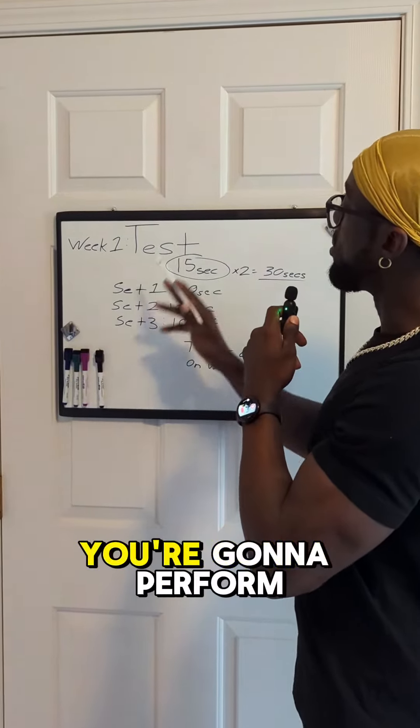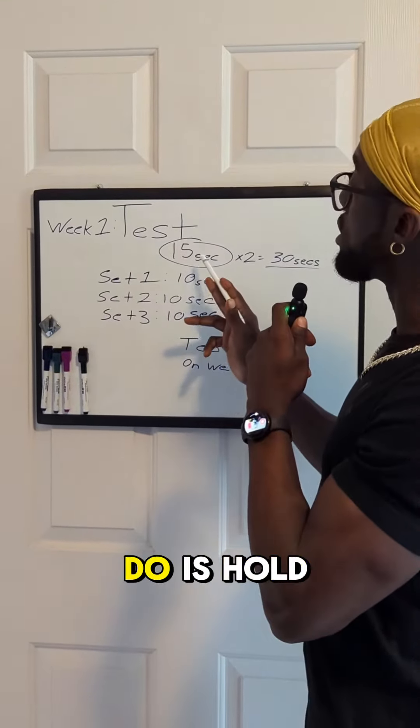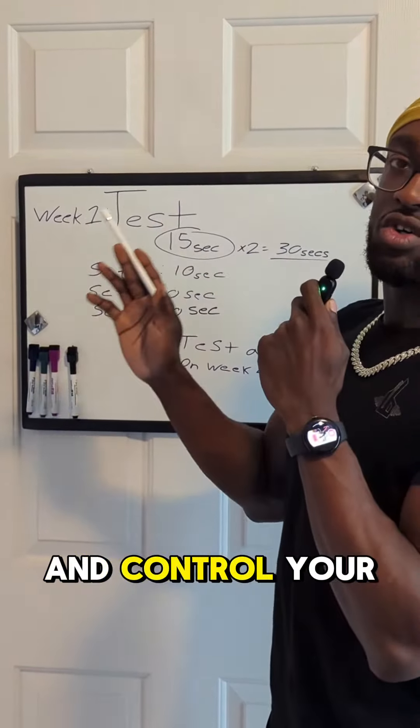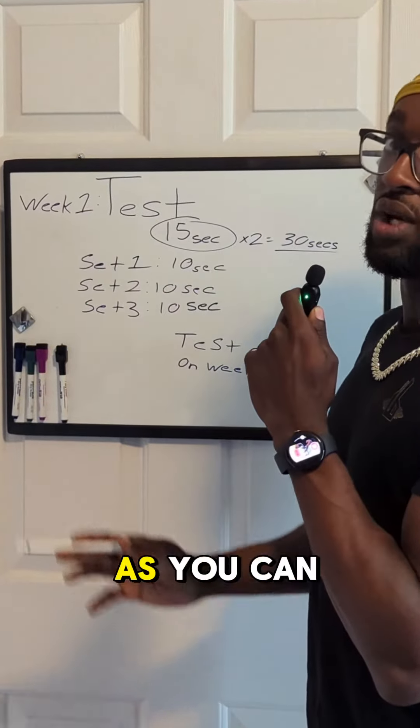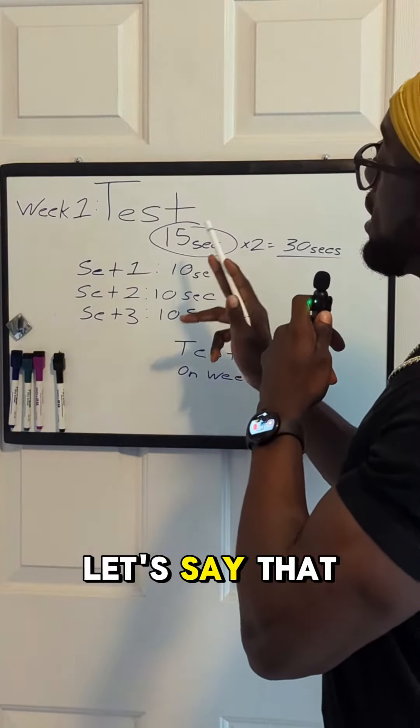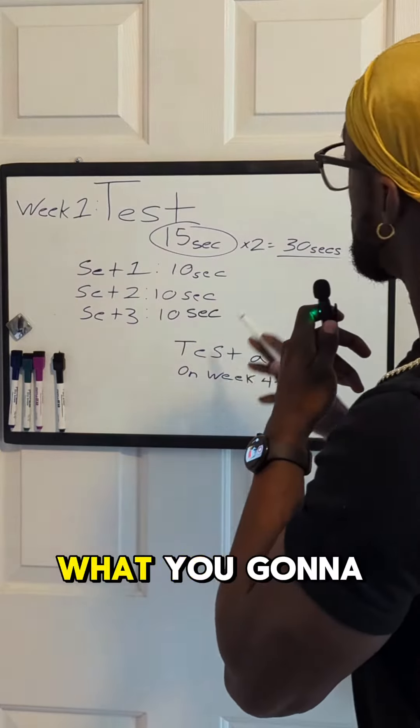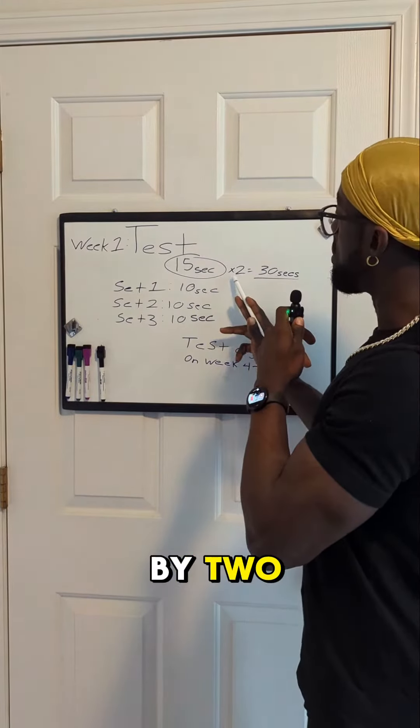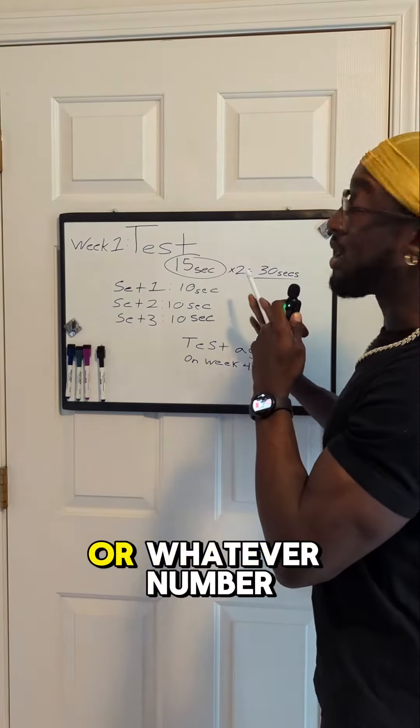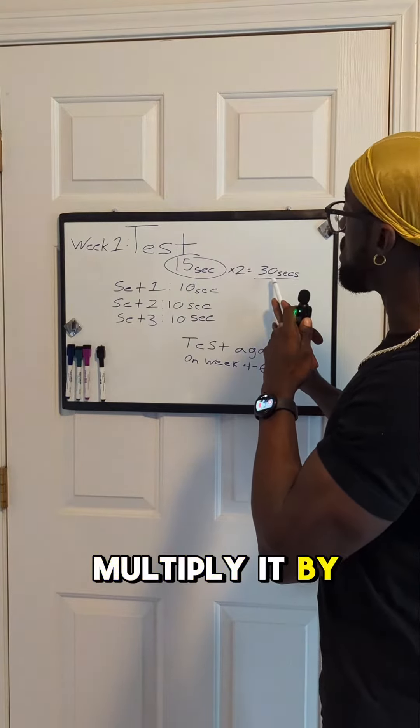Week one, you're going to perform one test of your pull-ups. Hold yourself up and control your eccentric on the way down for as long as you can. For example, let's say that's 15 seconds for test one. What you're going to do is multiply that number by two to get a total of 30 seconds, or whatever your number is times two.